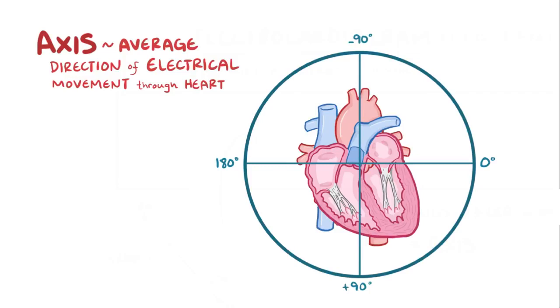More specifically, axis usually refers to the mean QRS vector, which is the size and direction of the depolarization wave as it moves through the ventricles.